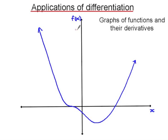Looking at this function f(x), we consider the gradient throughout. In the first section, the gradient is negative, and there's a horizontal point of inflection where the gradient is zero. After that, the gradient continues to be negative until we reach the minimum turning point, where the gradient is also zero. From then on, the gradient becomes positive.